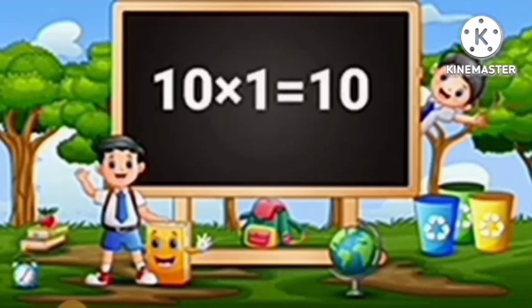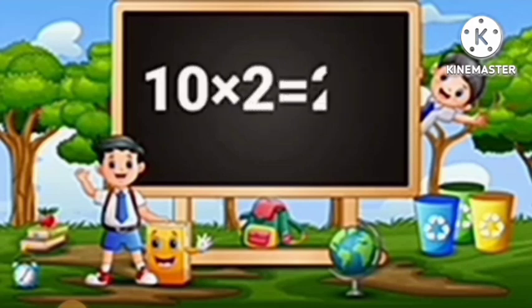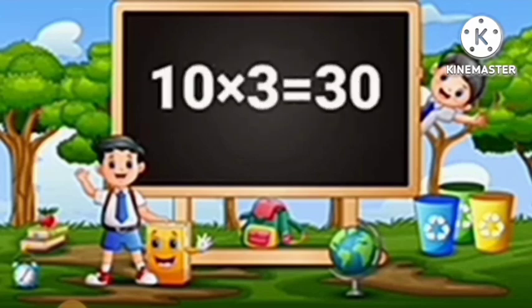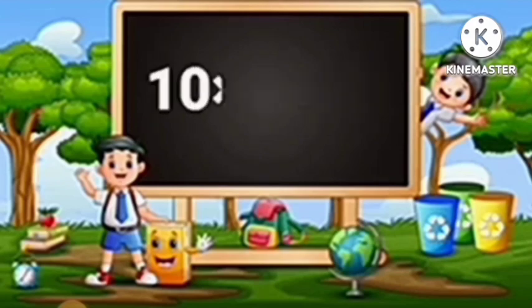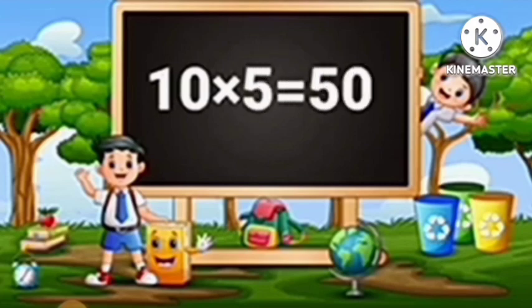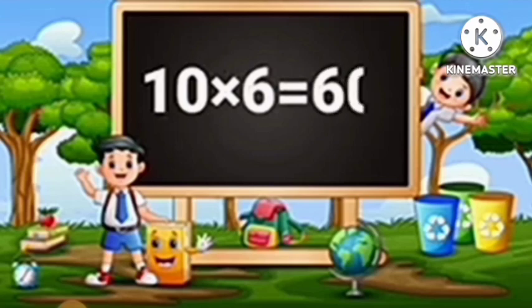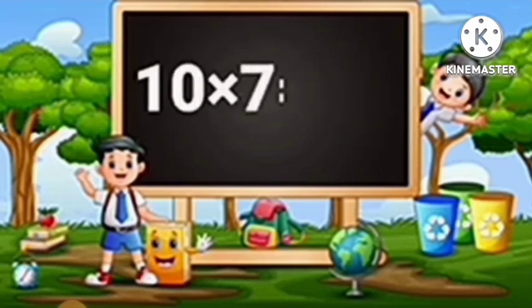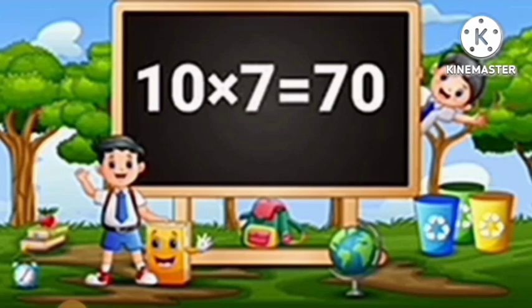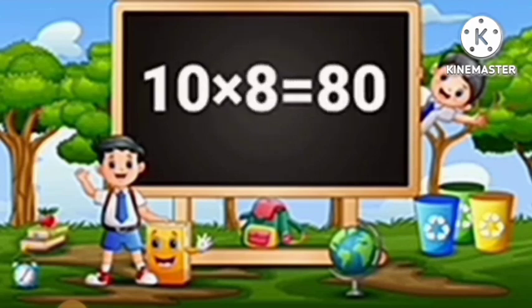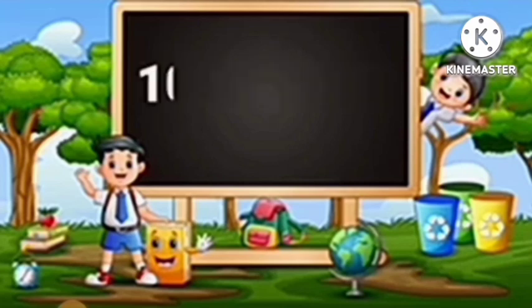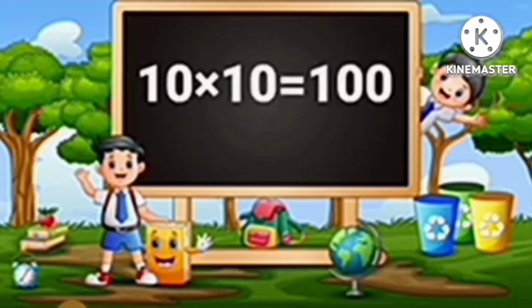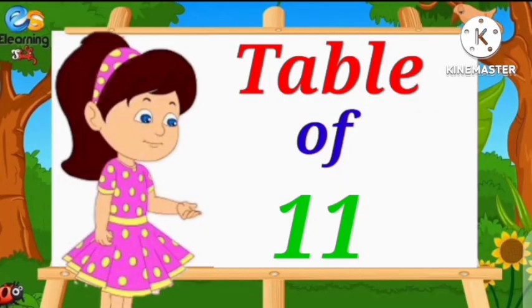Table of Ten. Ten ones are ten. Ten twos are twenty. Ten threes are thirty. Ten fours are forty. Ten fives are fifty. Ten sixes are sixty. Ten sevens are seventy. Ten eights are eighty. Ten nines are ninety. Ten tens are one hundred.